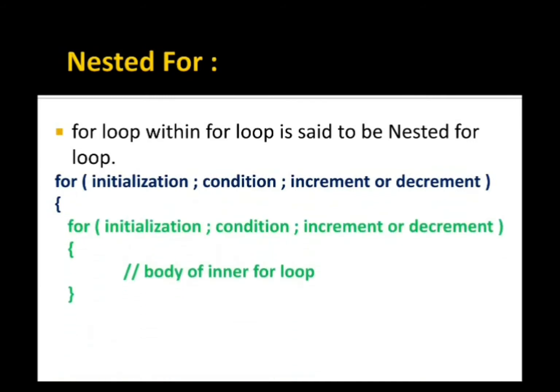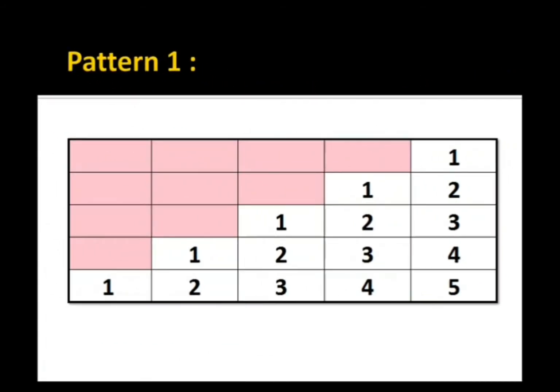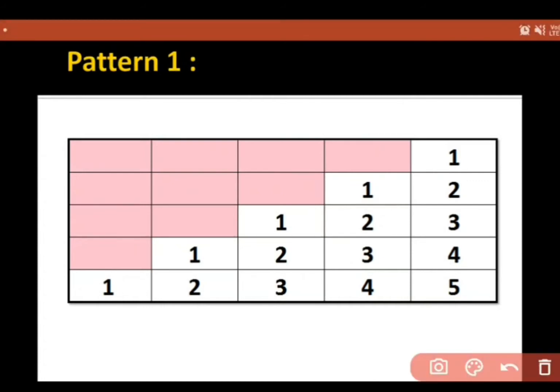First of all we have initialization, then condition, then increment/decrement of the outer loop, then the inner loop, and then the closing of the outer loop. Moving forward, we have a pattern in front of us where we have some spaces and then numbers — let's look at how we are going to do that.